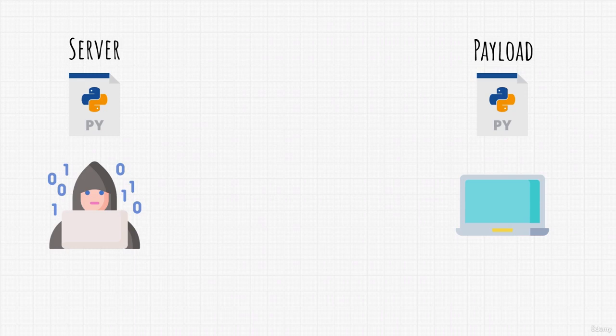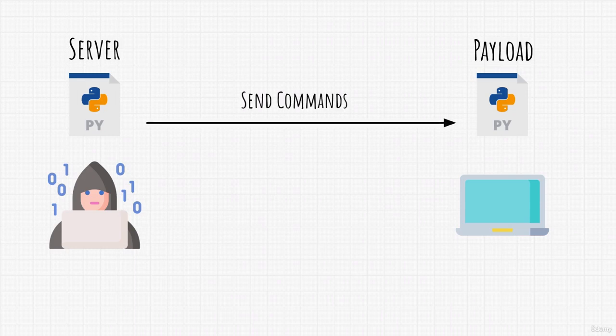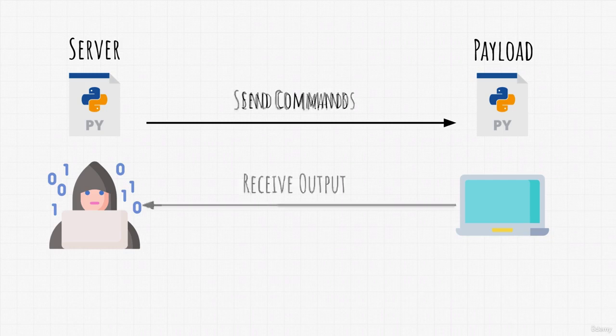We will be sending commands from our Kali Linux machine. For example, if we wanted to check out all the files in the current working directory on the target machine, we know that the command for this is dir on Windows and ls on Linux. Once we send that from our server, we would want our target to send us back the response, which will contain an output of all the files and folders inside of that specific directory.